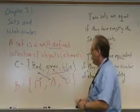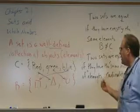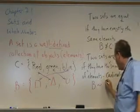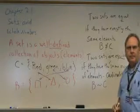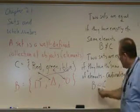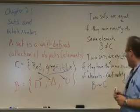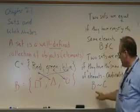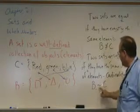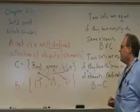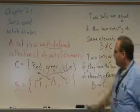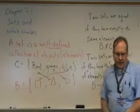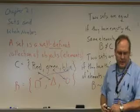So, this idea of equivalence, we would say that B is equivalent to set C. Sometimes they use a double tilde there to note equivalence, but I'll use a single one. B is equivalent to C. These sets are equivalent because they have the same cardinality or the same number of elements.